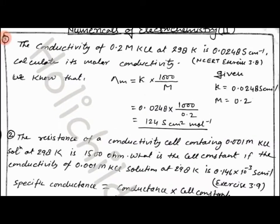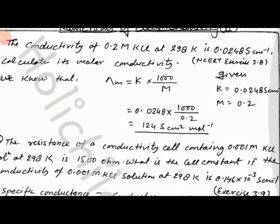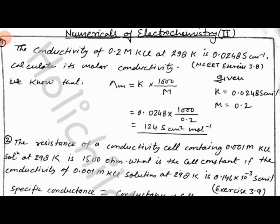First of all, question number one, which is from NCERT exercise 3.8: The conductivity of 0.2 molar KCl at 298 K is 0.02486 Siemens per cm. Calculate its molar conductivity.